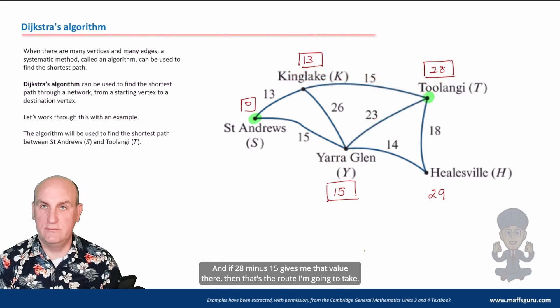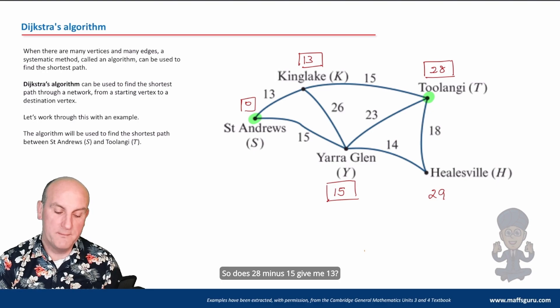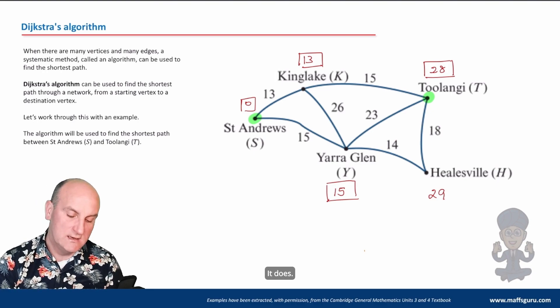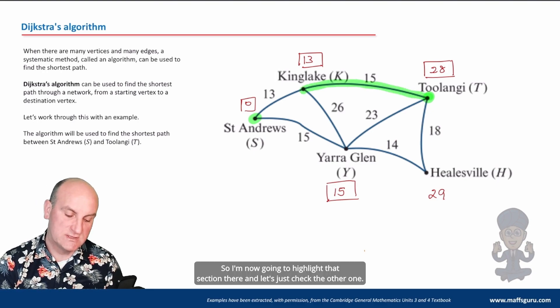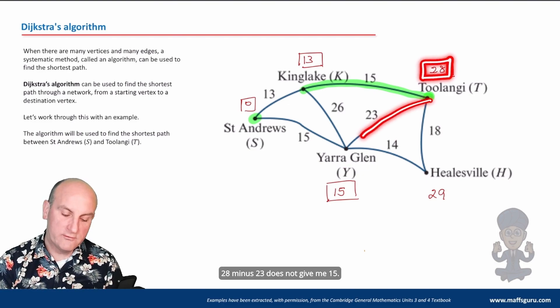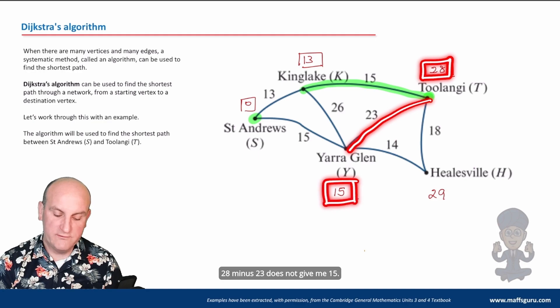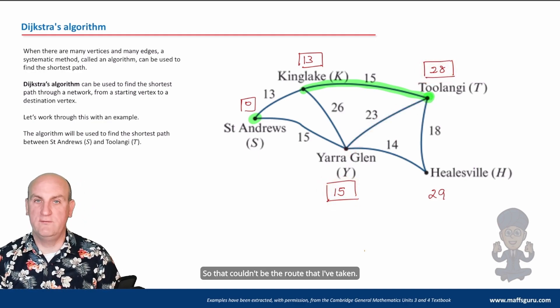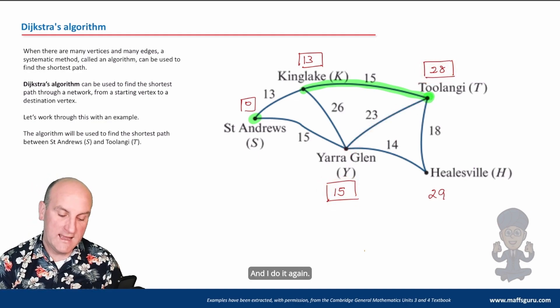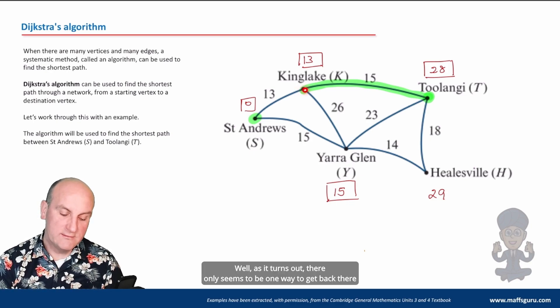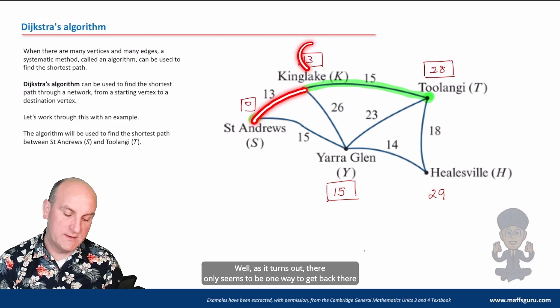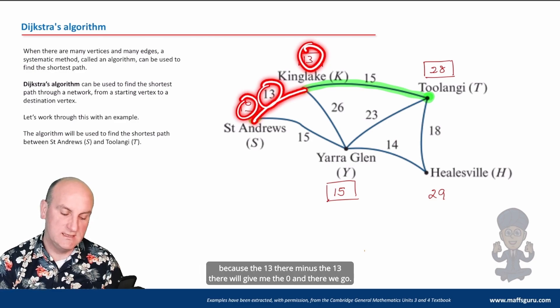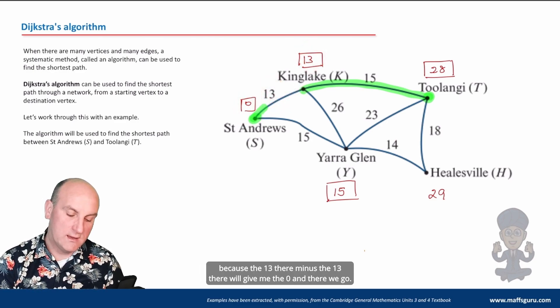So I'm now going to do the 28 and I'm going to take away the 15, and if 28 minus 15 gives me that value there, then that's the route I'm going to take. So does 28 minus 15 give me 13? It does, so I'm now going to highlight that section there. And let's just check the other one: 28 minus 23 does not give me 15, so that couldn't be the route that I've taken. Okay, right, and I do it again. I'm now at Kinglake. Well, as it turns out, there only seems to be one way to get back there, because the 13 there minus the 13 there will give me the zero.